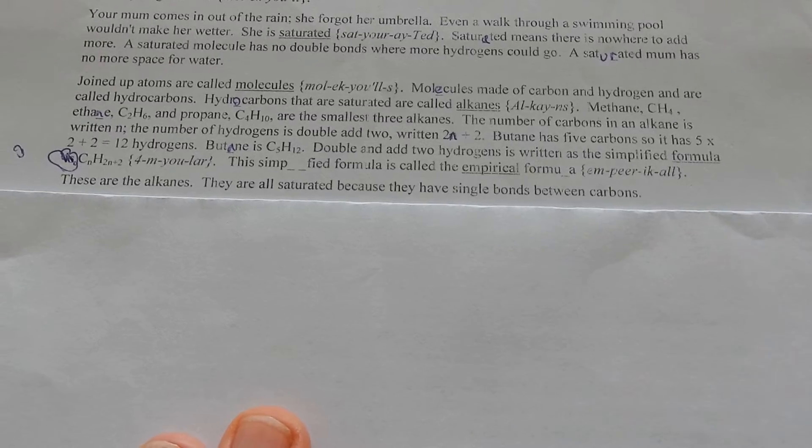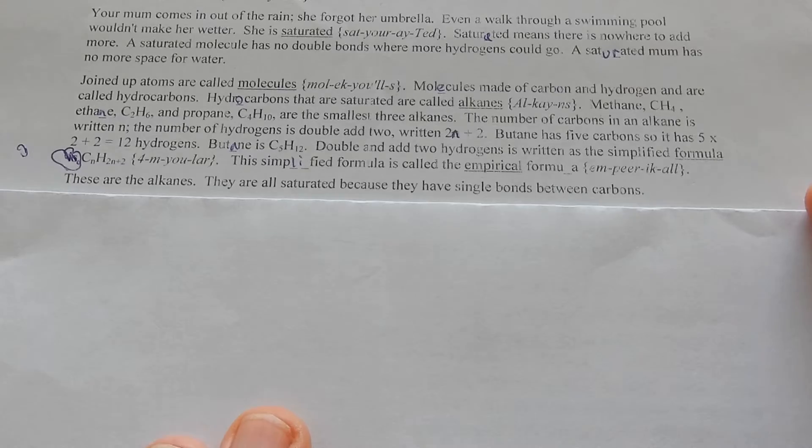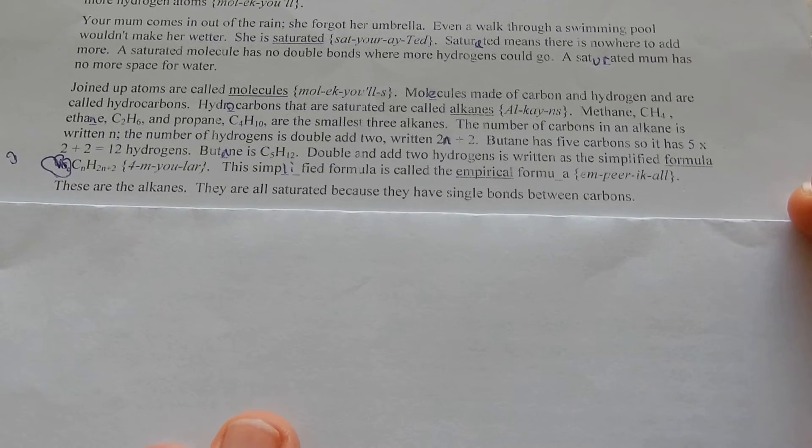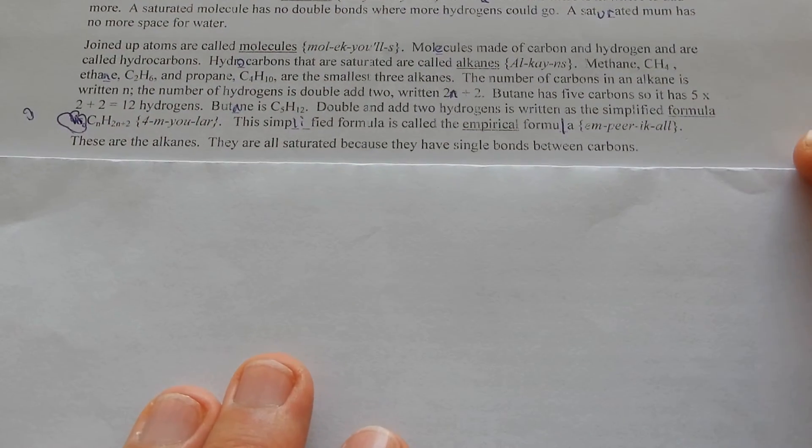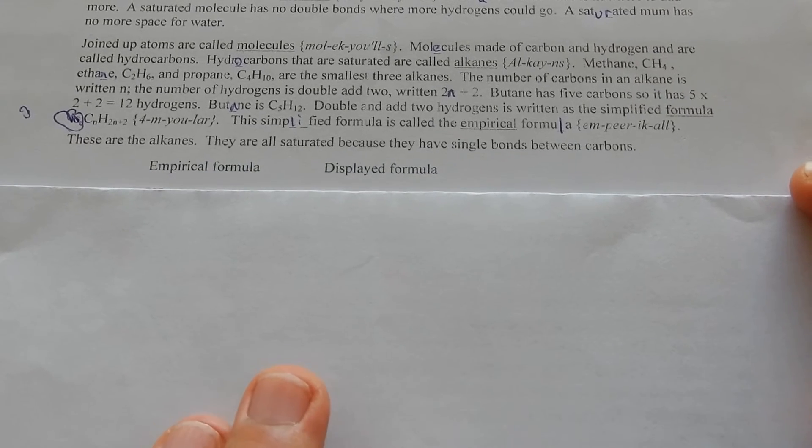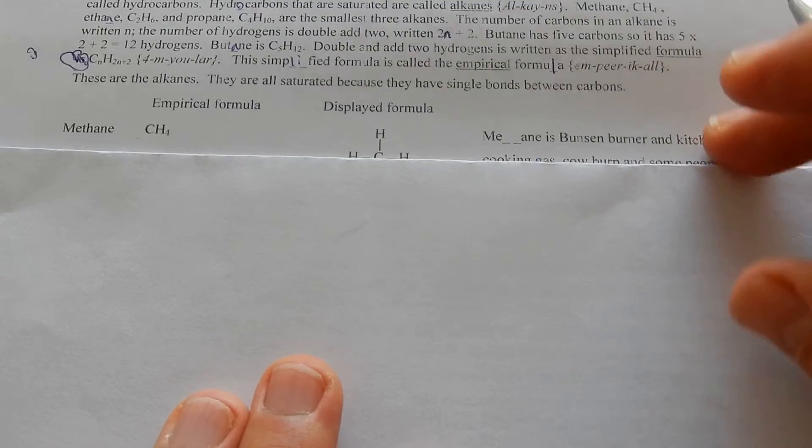CnH2n plus 2, formula. This simplified formula is the empirical formula. These are the alkanes. They are all saturated because they have single bonds between carbons and single lines.